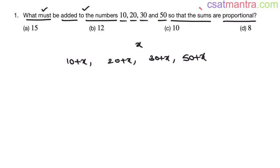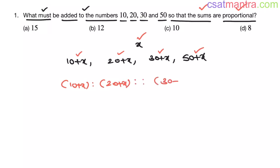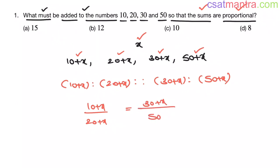Now if these sums are in proportion, then what is the value of x? When they are in proportion, we have (10 plus x) ratio (20 plus x) is proportional to (30 plus x) ratio (50 plus x). So this gives us (10 plus x) divided by (20 plus x) equals (30 plus x) divided by (50 plus x). Now doing cross multiplication.